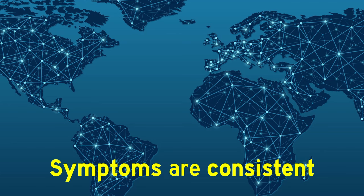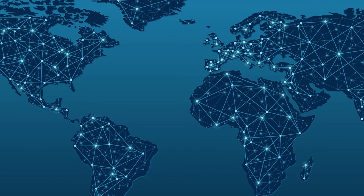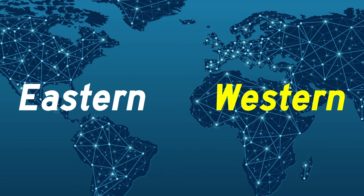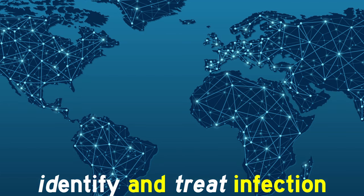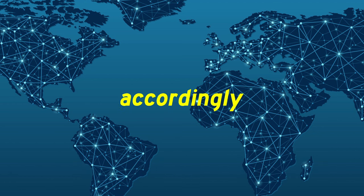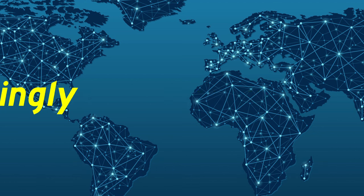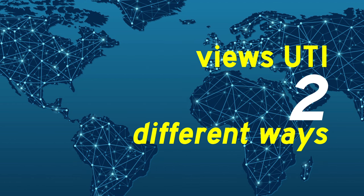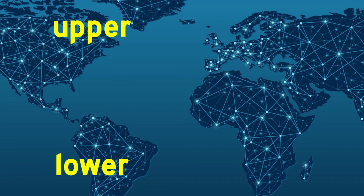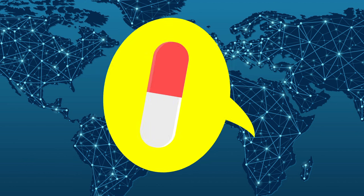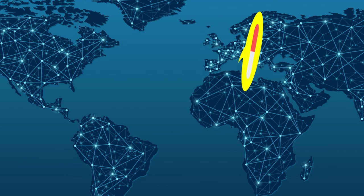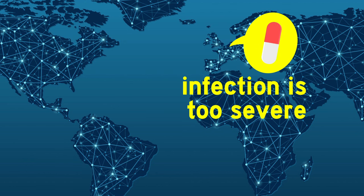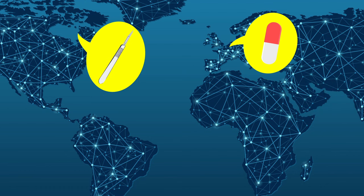As symptoms are consistent throughout the world, both Eastern and Western medicine have managed to identify and treat this infection accordingly. Western medicine views the disease in two different ways: upper and lower tract infection. Both can be treated using antibiotics. However, if the infection is too severe, minor surgeries may be performed to treat it.